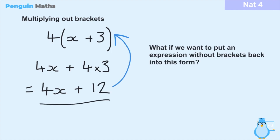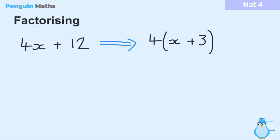But here's a question — what if we want to put an expression without any brackets back into the form where we have brackets? Because sometimes in maths it's better to have an expression in expanded form and sometimes it's better to have it in bracket form. So it's important that we know how to multiply out the brackets but also put it back into brackets. The process of going from an expression without brackets to one with brackets is called factorising.